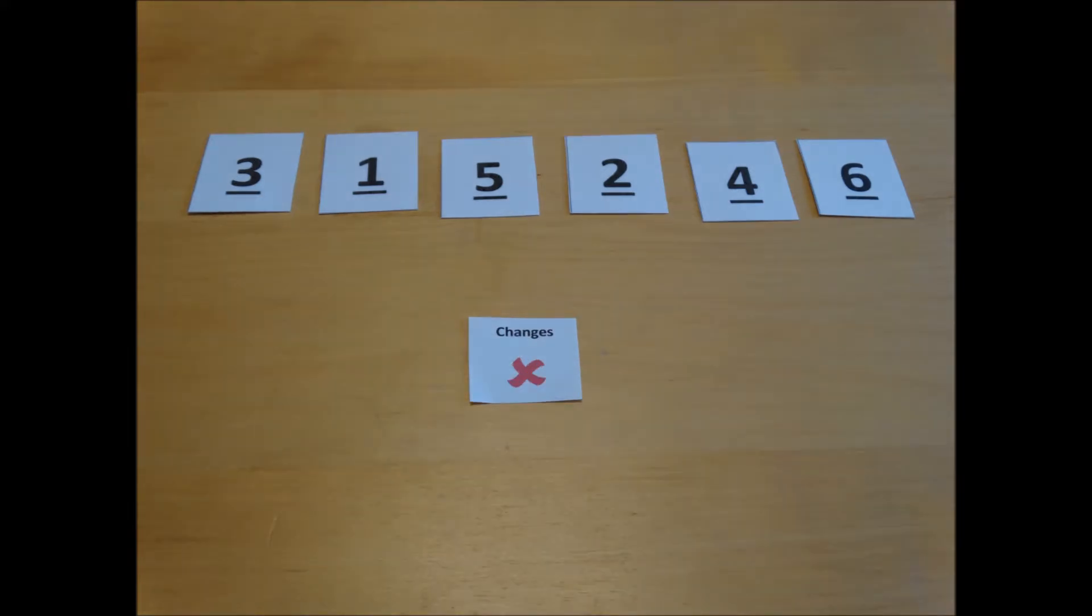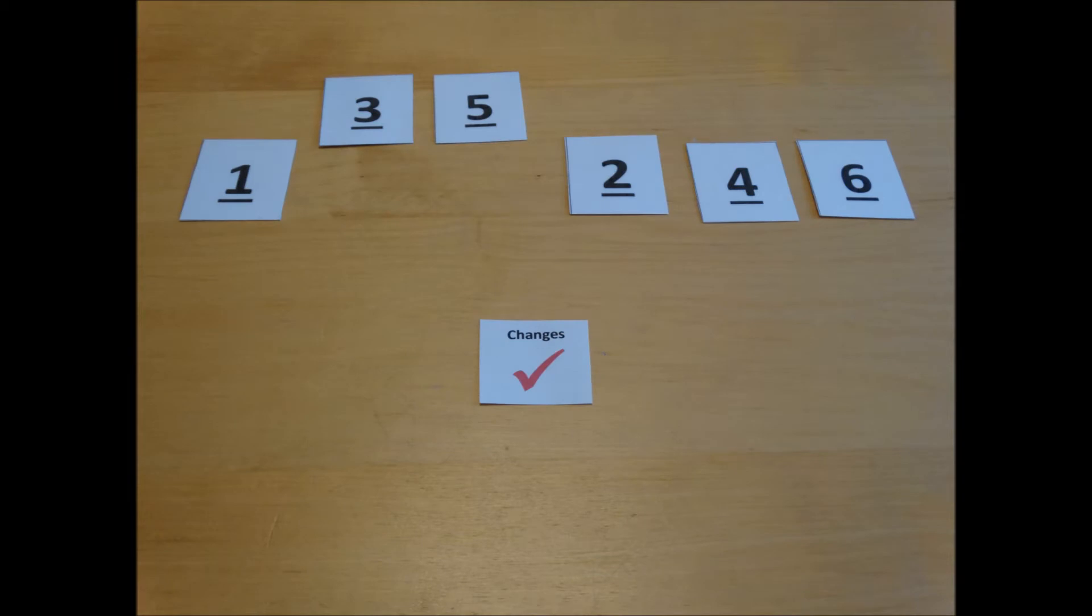This means that we go back to place 0 and 1, check to see if they're in the right order, and swap them over if they're not, and work through the whole array again.